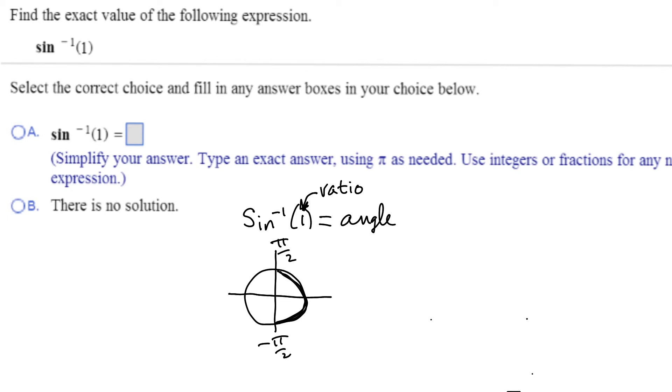So what I got to do is think about, okay, from minus pi over two to pi over two, which angle is it where the sine value is one? And that's going to be pi over two. So that inverse sine of one then is going to be the angle pi over two.